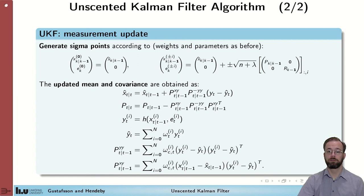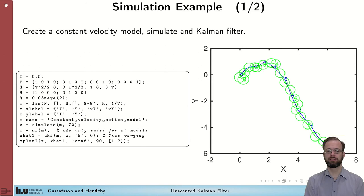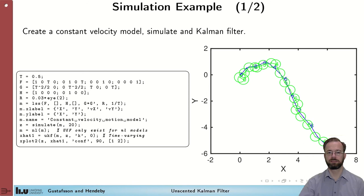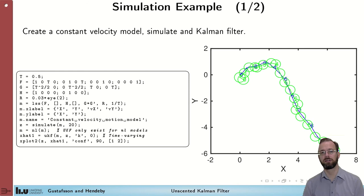We furthermore compute the cross covariance between x and y as a weighted sample cross covariance. Based on this, we can compute the mean and covariance of the estimate using Lemma 7.1, as we have computed all the components needed. To illustrate, we use the Signal Systems Toolbox in MATLAB with the same example as the Kalman filter module: a constant velocity model where we measure position. Note that we need to convert this linear state-space model to a nonlinear object before applying the unscented Kalman filter.